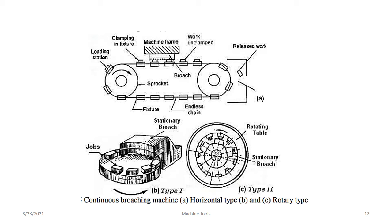There is also a rotary type continuous broaching machine rotating at 360 degrees. There is a horizontal type with sprockets and chain. These are the continuous broaching machine types — horizontal continuous broaching machine and rotary continuous broaching machine.